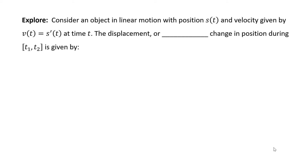The displacement, or net change in position, during the closed interval from t sub 1 to t sub 2 is given by the integral from t sub 1 to t sub 2 of v of t dt, which equals s evaluated at t sub 2 minus s evaluated at t sub 1.